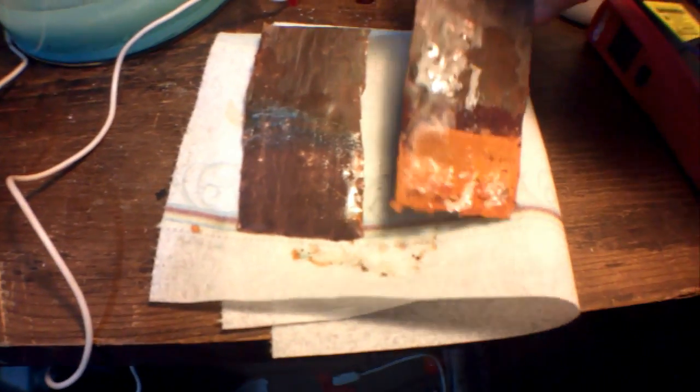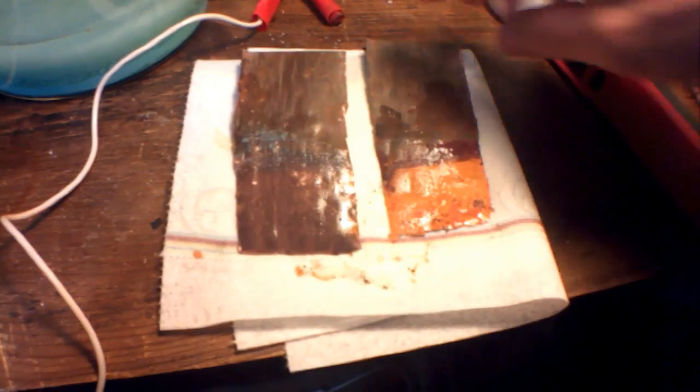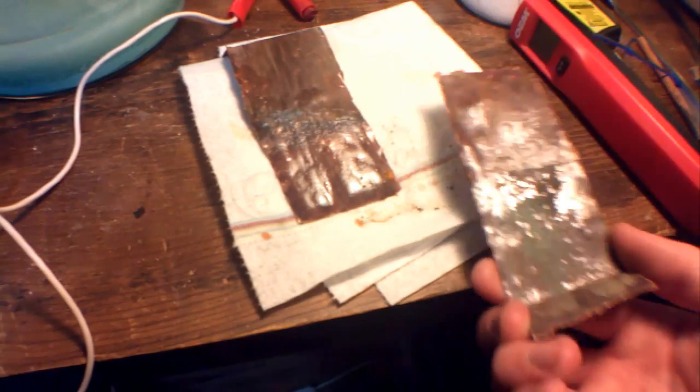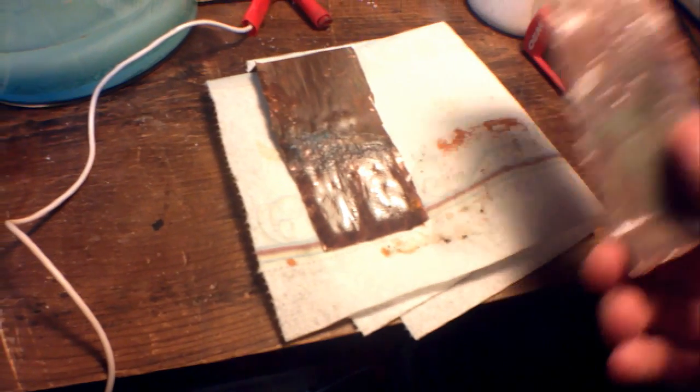Here we have the cathode and anode, and as you can see they're quite changed by the reaction. These two sides were facing each other, so that was where the least resistance was—that's where most of the reaction happened.